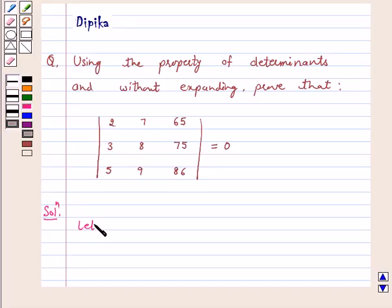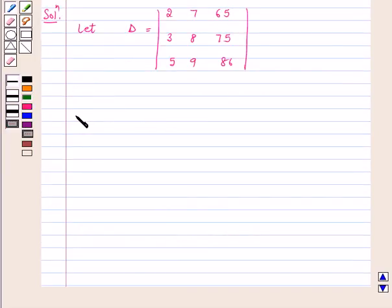Let delta equal our given determinant, that is 2 7 6 5, 3 8 7 5, 5 9 8 6. We have to prove that delta is equal to 0 by using the property of determinants. Again, we can rewrite there as delta is equal to 2, 3, 5.